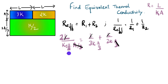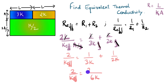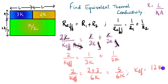What remains is 2 divided by K_effective equals 1 divided by 3K plus 1 divided by 2K. Taking the LCM of 6K, this gives 2 over K_effective equals 5 over 6K. So K_effective comes out to be equal to 12K divided by 5. This is the equivalent thermal conductivity of the two blocks in series.